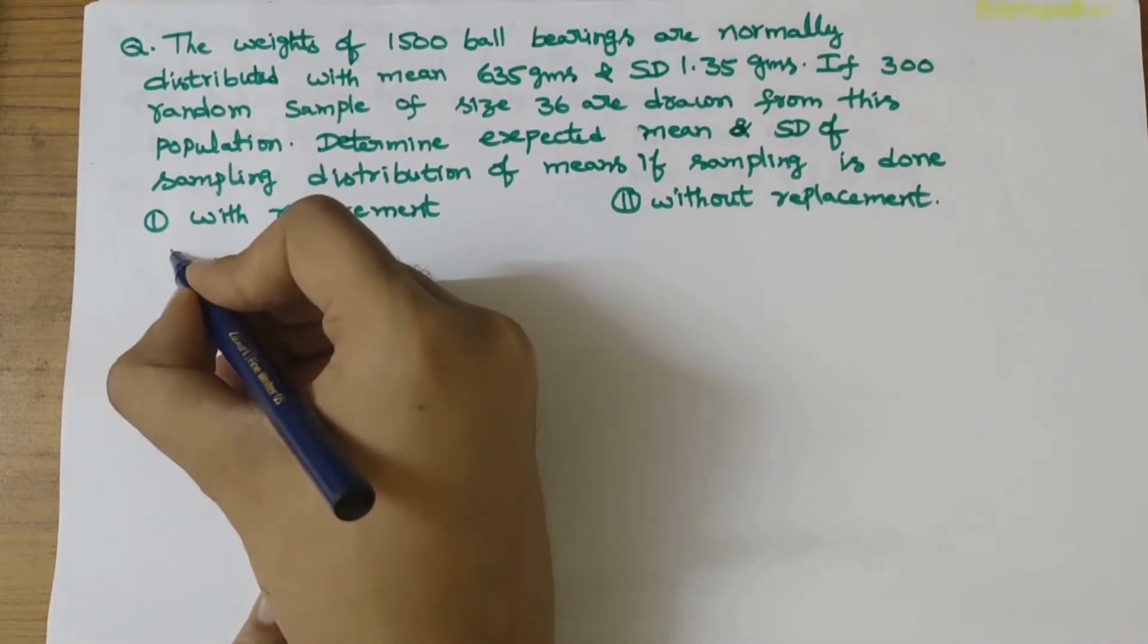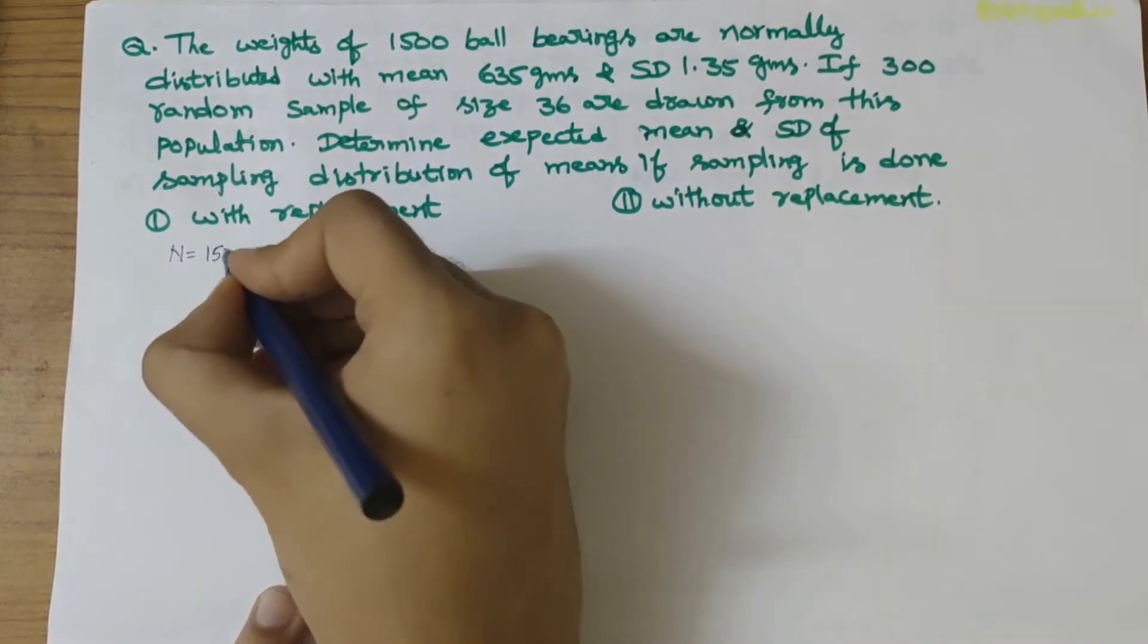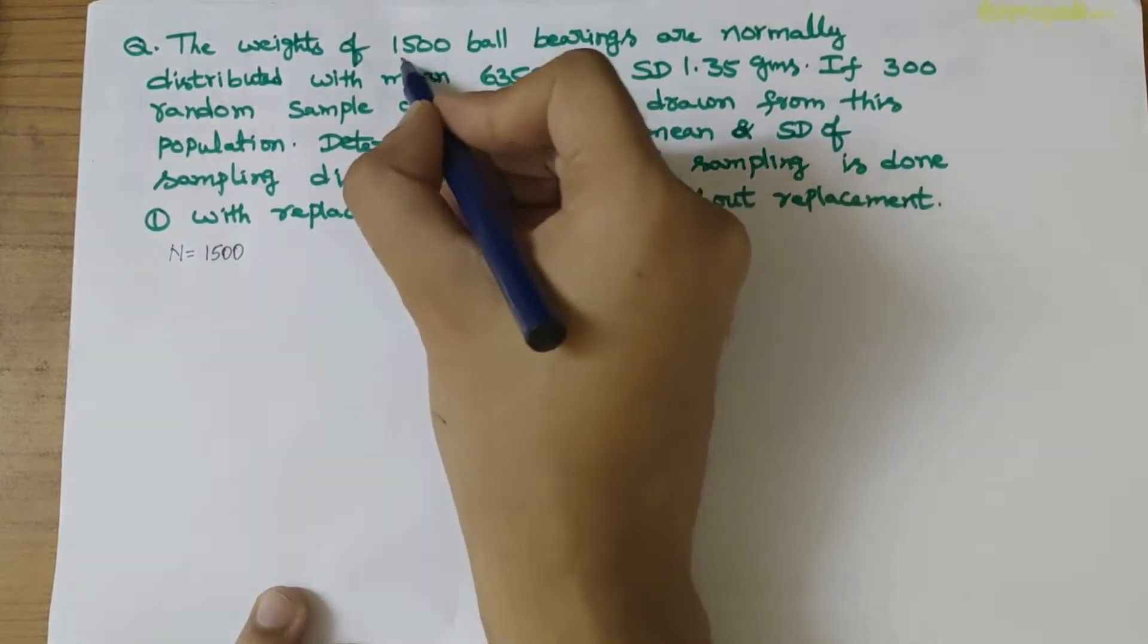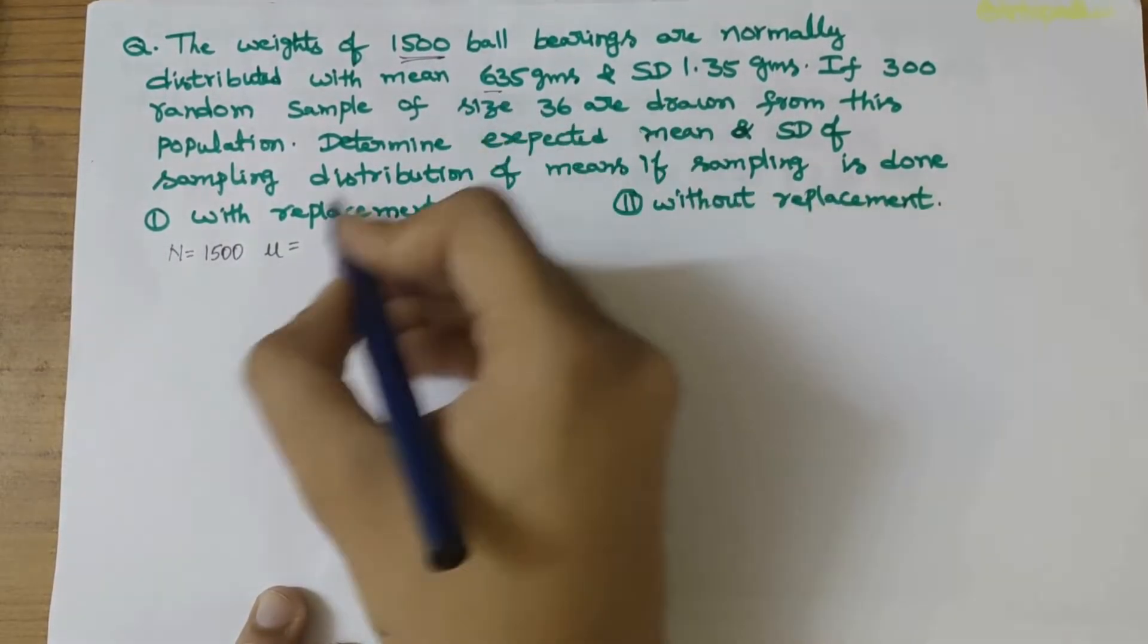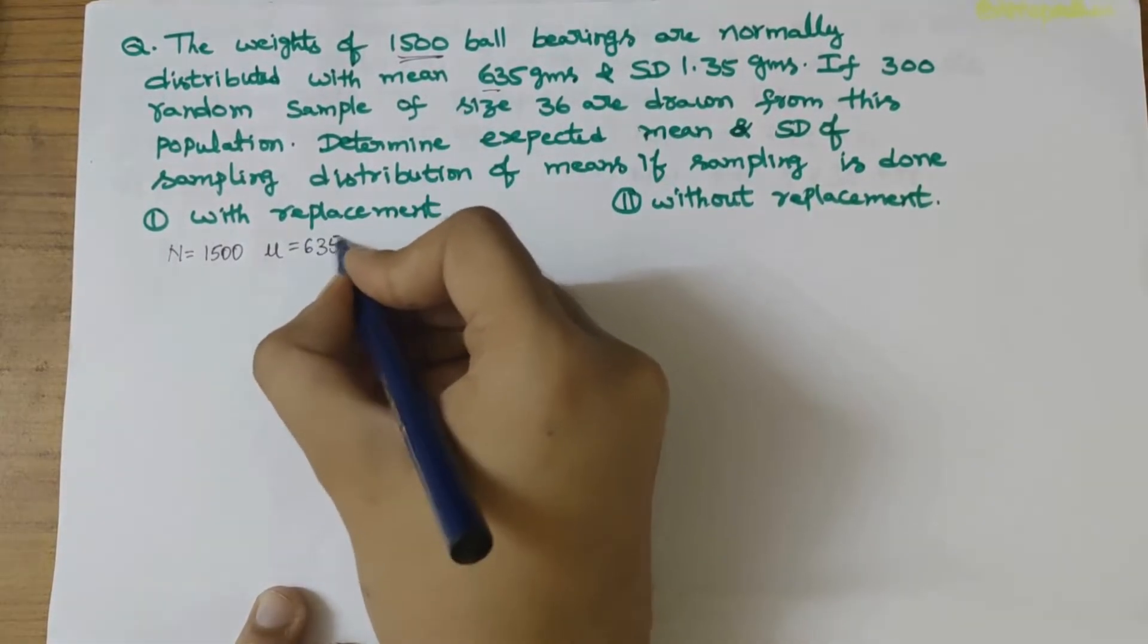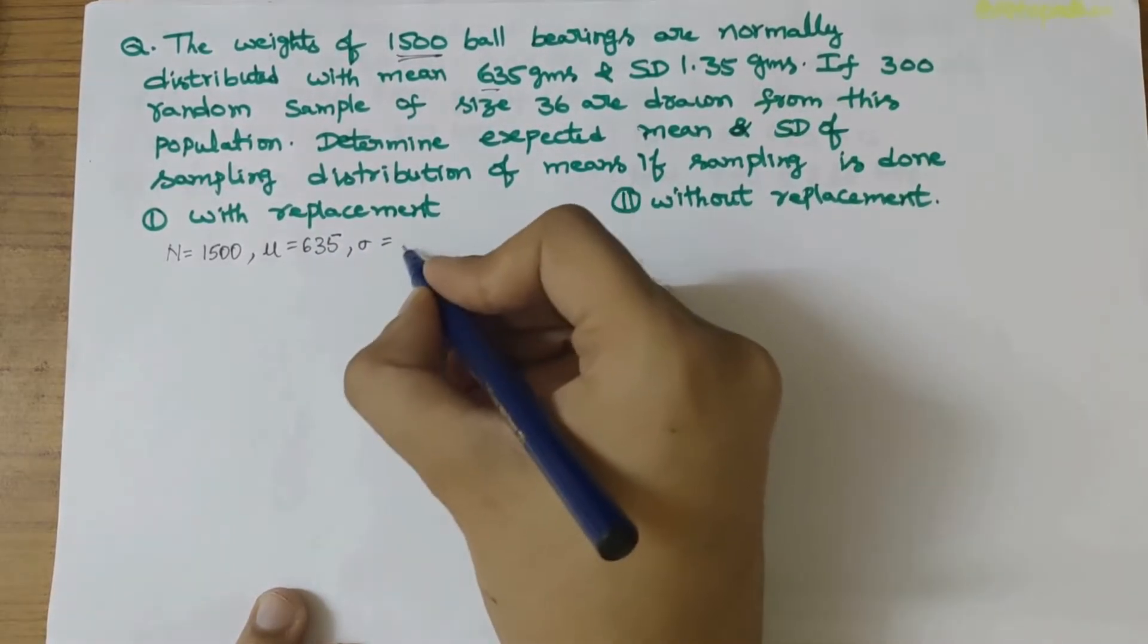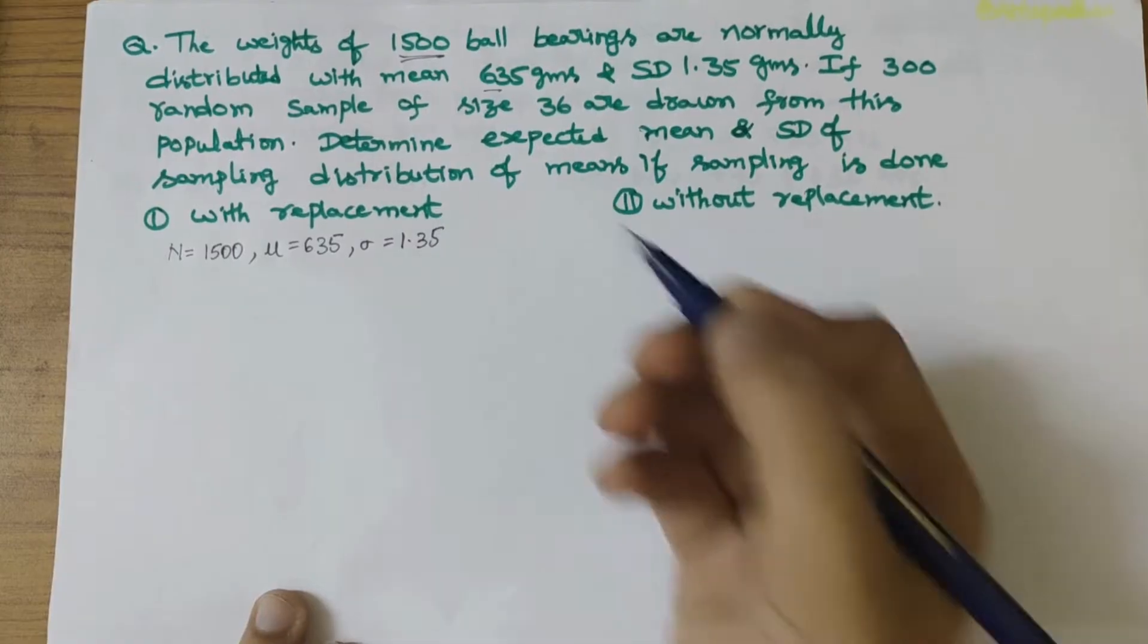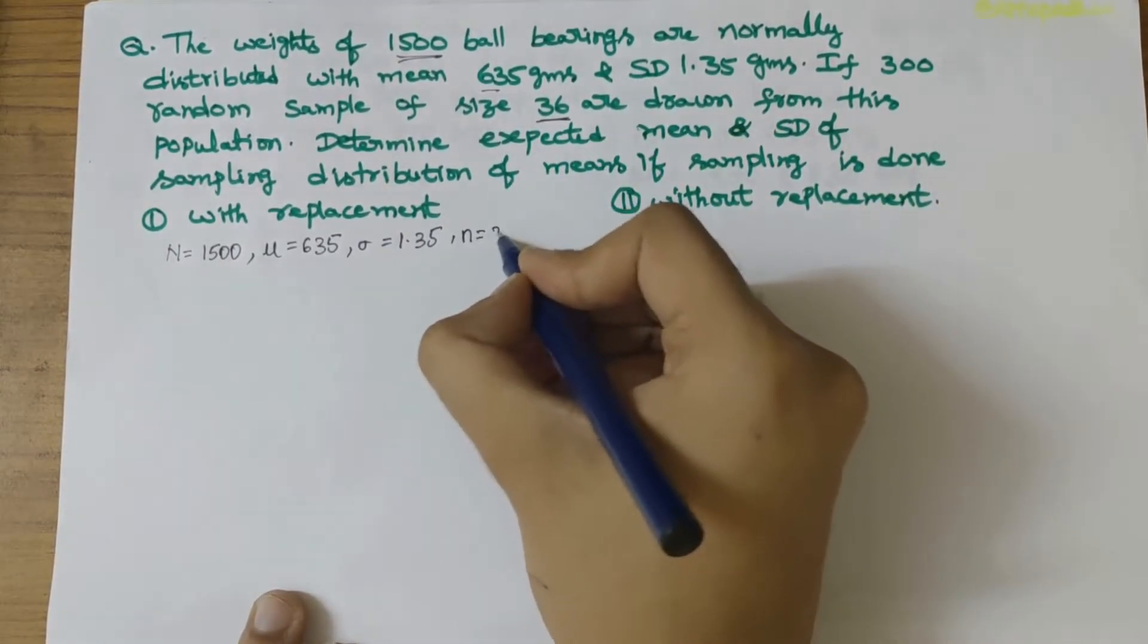Let's first write the observations. Capital N, the total size, is 1500 ball bearings. The mean μ is 635, standard deviation σ is 1.35, and the sample size n equals 36.